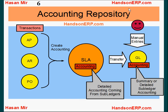If general ledger module is the accounting hub, then what is the role of the subledger accounting module? All accounting coming from subledgers like payables, receivables, purchasing, and order management will go into subledger accounting module first. Any accounting that is not coming from subledgers — including manual entries, accounting from other systems, or other ledgers — will go directly into the GL module.